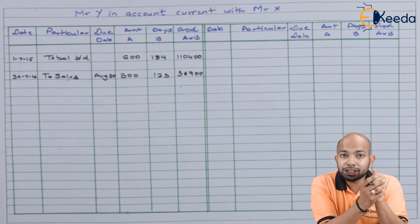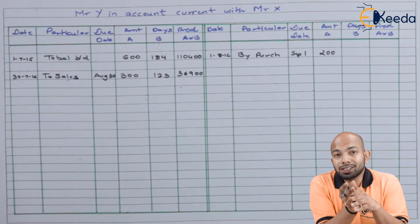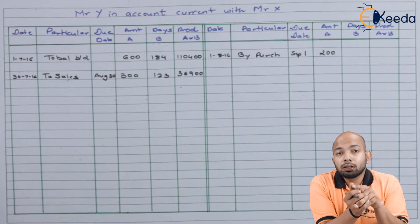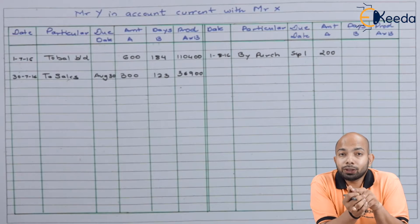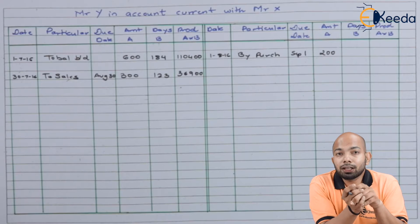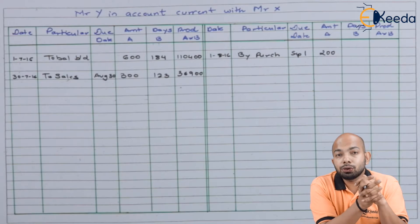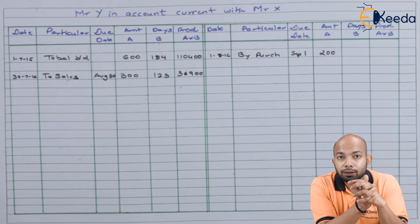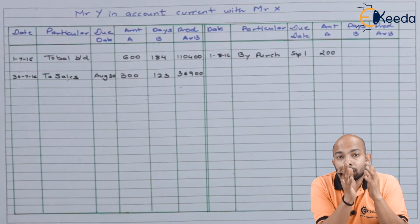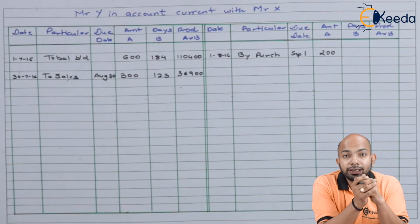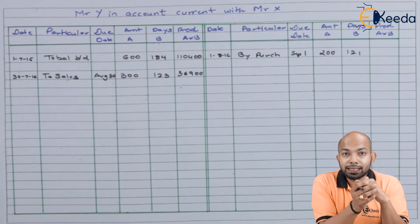The next transaction refers to purchases made for Rs. 200. The due date has also been mentioned as one month credit period. The transaction happened on 1st of August, so the due date will be 1st of September. From 1st of September until the closure date of 31st of December, that gives a total of 121 days.